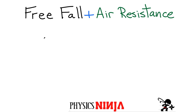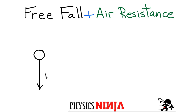First thing we're going to do is consider an object — this object is just going to be a ball, for example — and the ball has a certain mass. Therefore there is a weight acting down. The Earth is pulling down on this and the magnitude of that force is m times little g.